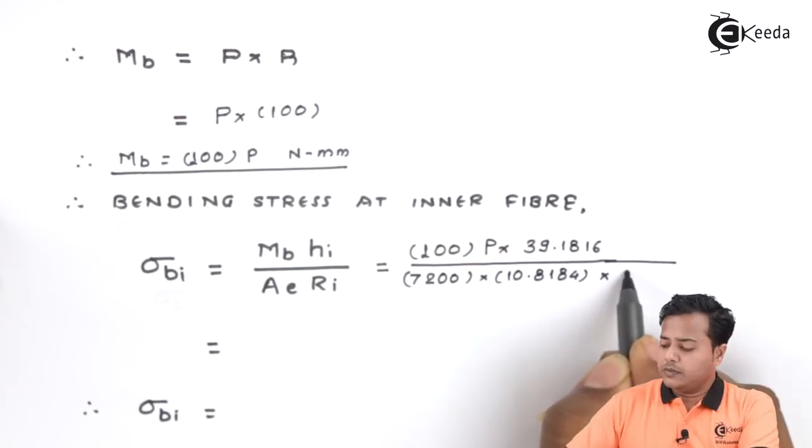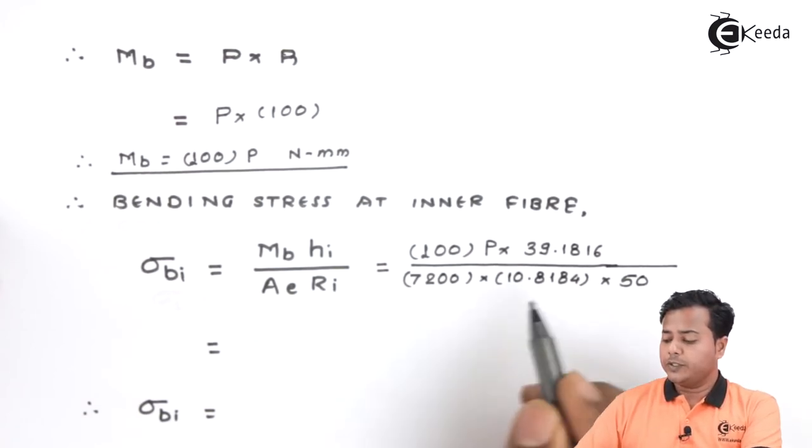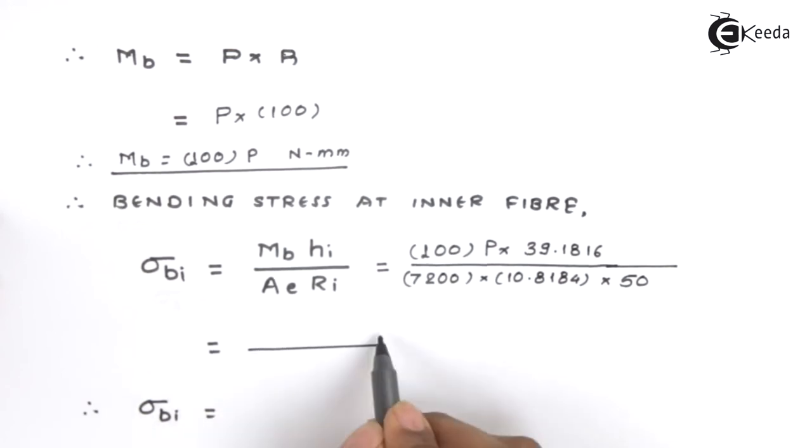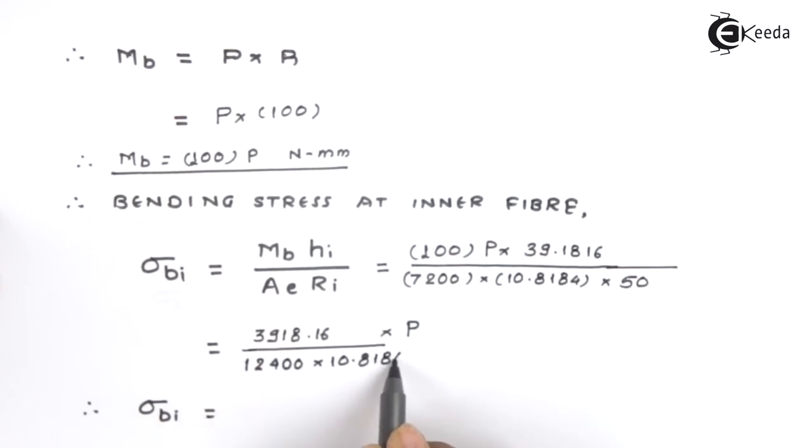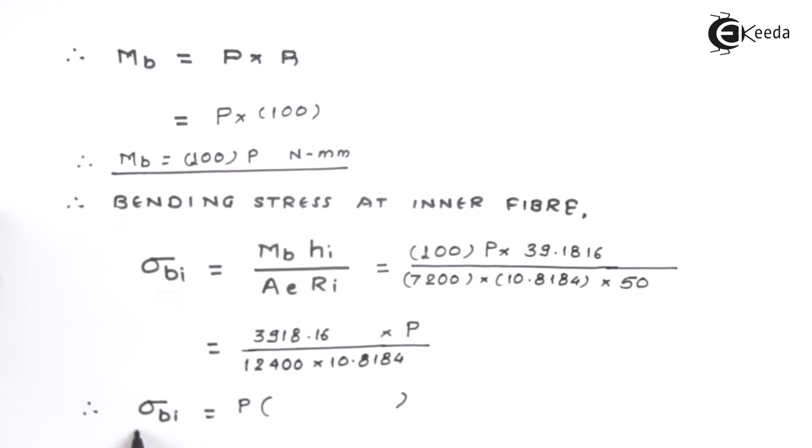And the last one, inner radius, which is 50. After evaluation of this particular term, we will get the value of sigma_bi and the final value in terms of P comes out with certain constant 39.1816 times P divided by 7200 times 10.8184 times 150.